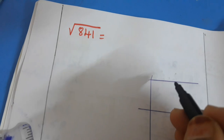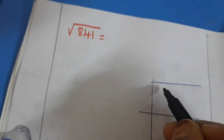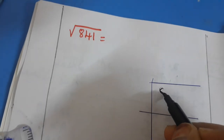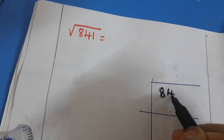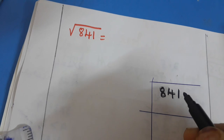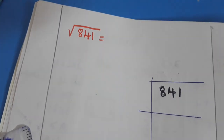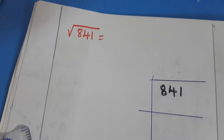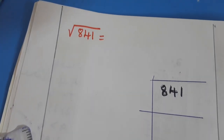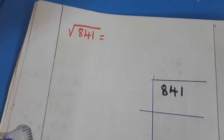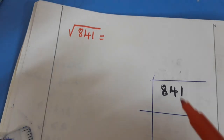Hello children, this is about finding square root using the long division method. So 841 is given and we have to find the square root of this.